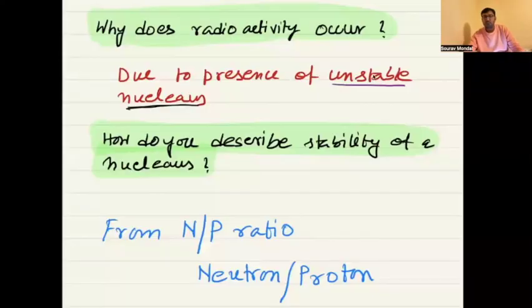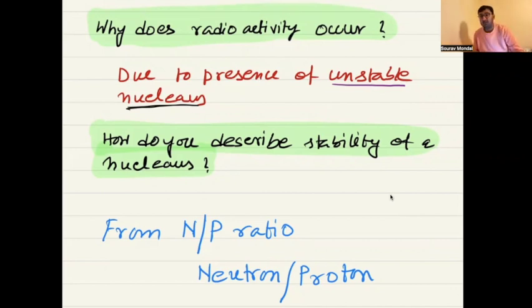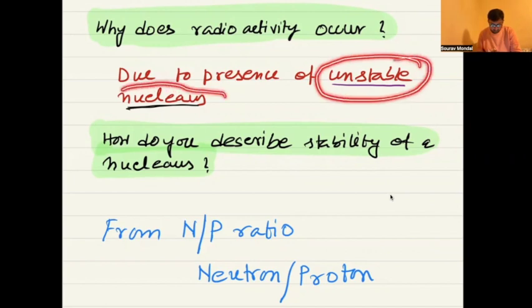So let's start the topic today. The topic is nuclear stability and instability — specifically the neutron-to-proton ratio. Why does radioactivity occur? This is today's main topic.